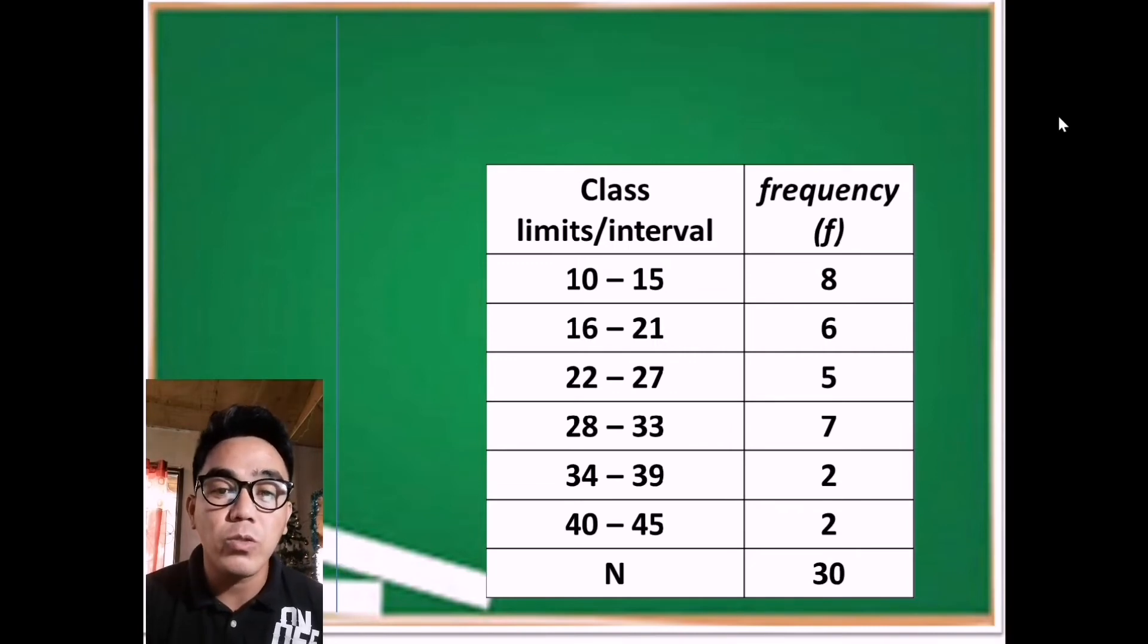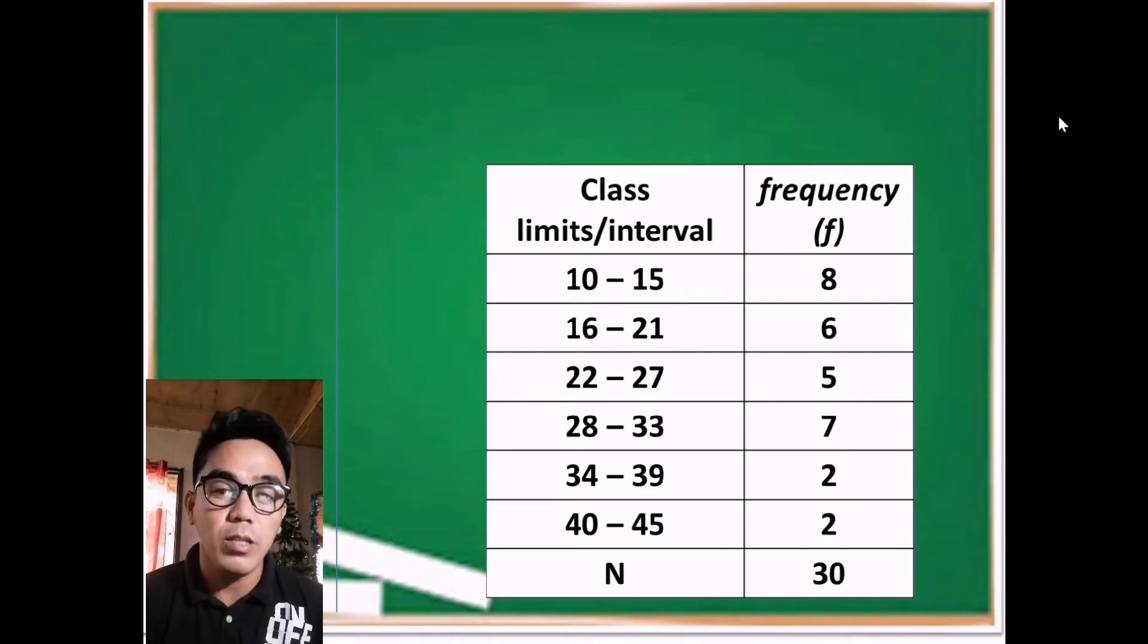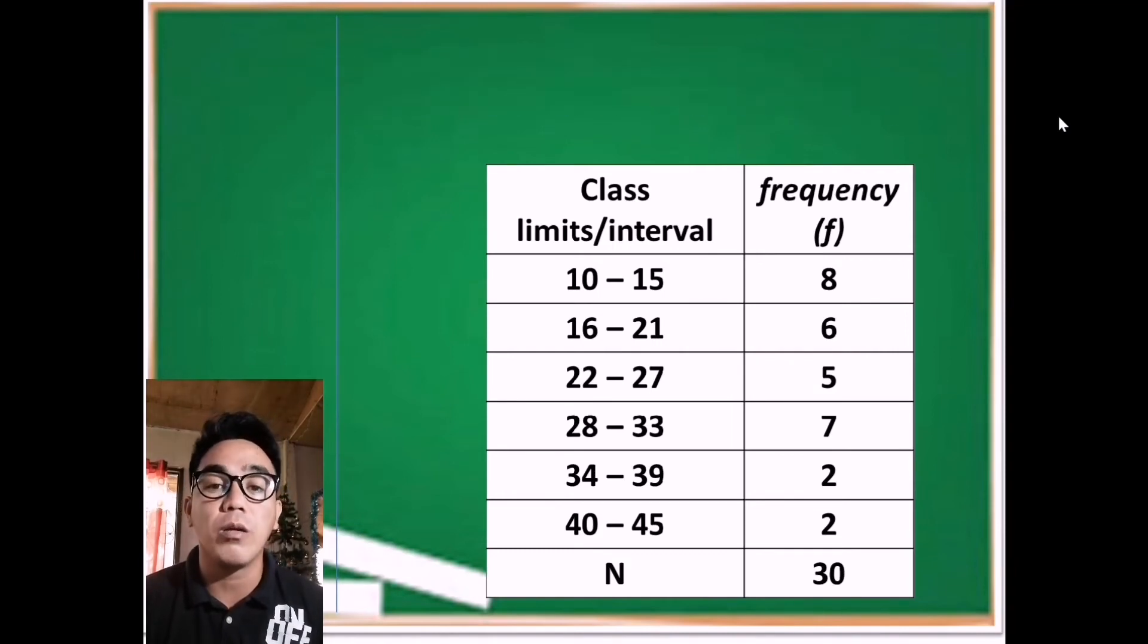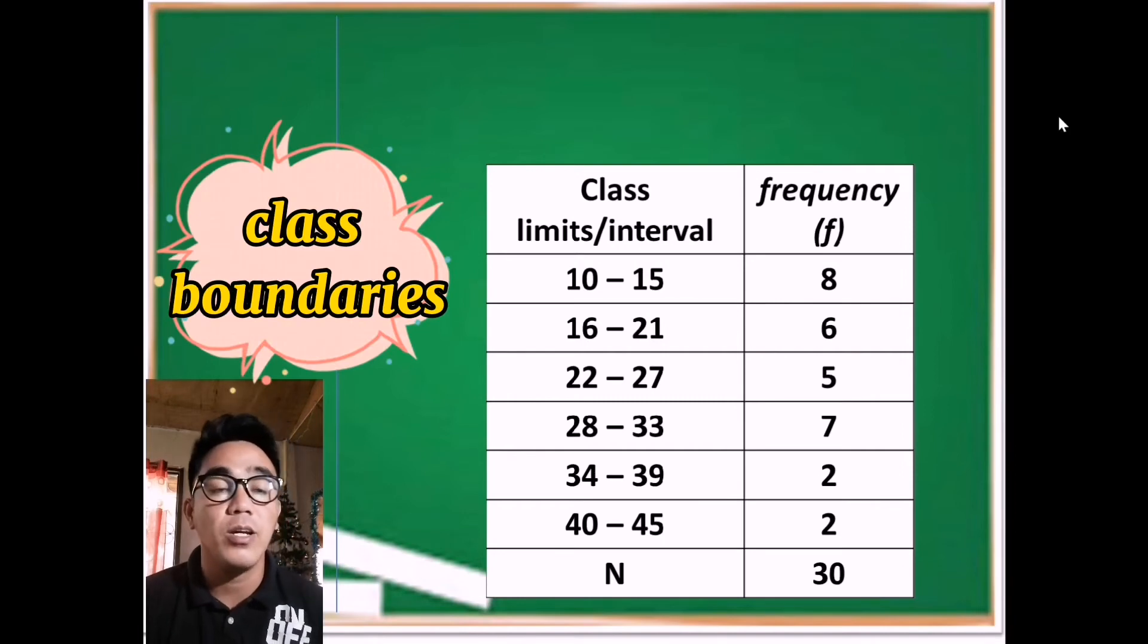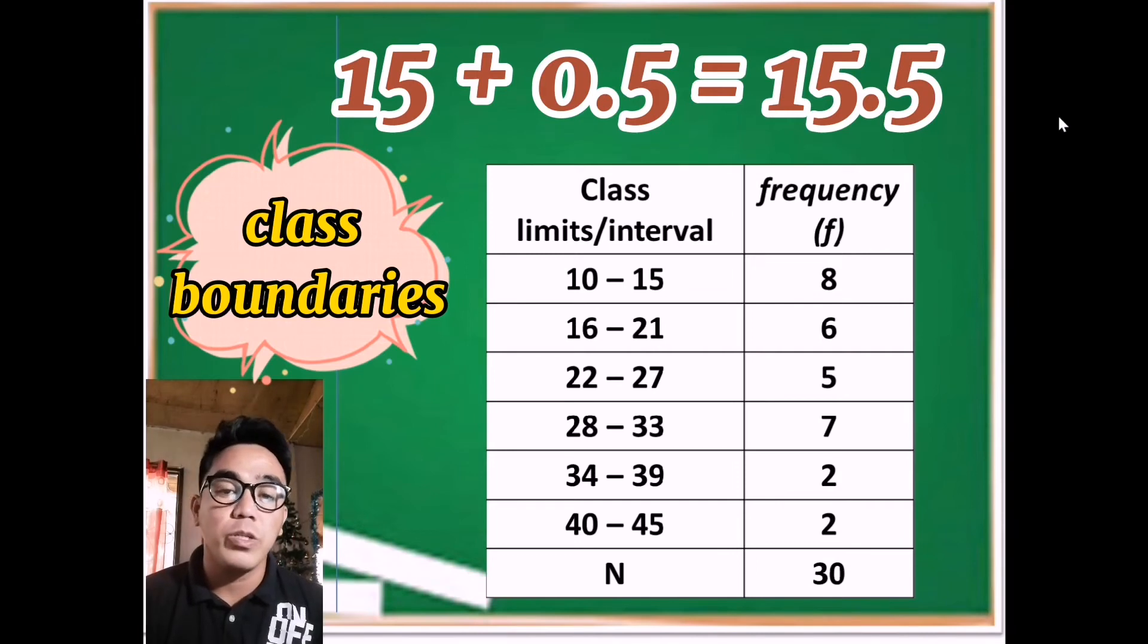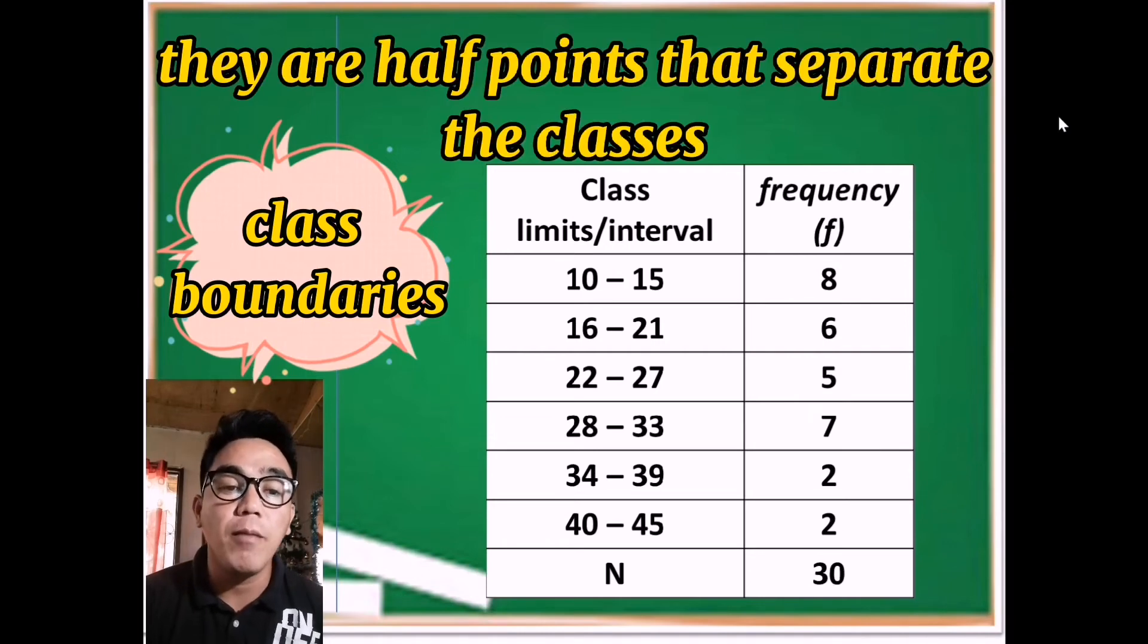Now if we're going to subtract the lower limit by 0.5 and add 0.5 to the upper limit, then we are talking about the class boundaries, as we have 9.5 to 15.5 which would be the class boundaries. So when you say class boundaries, there are half points that separate the classes.